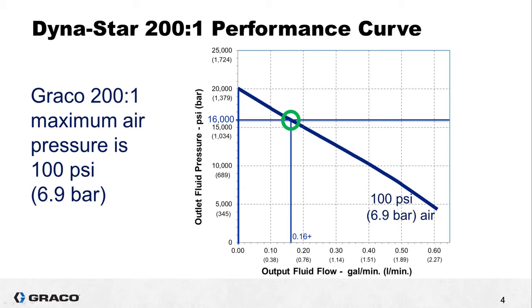0.16 GPM converts to about 37 and a half cubic inches per minute. So since we are a bit past the point 16 mark anyway let's just round that up to 38 cubic inches per minute. Keep this number in mind and we'll get back to it in a moment.